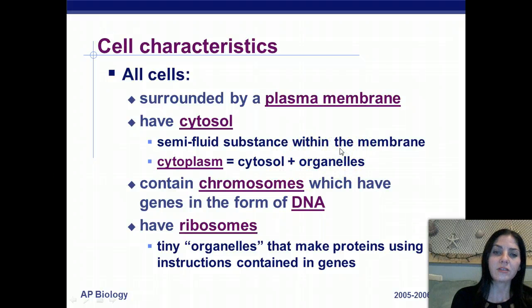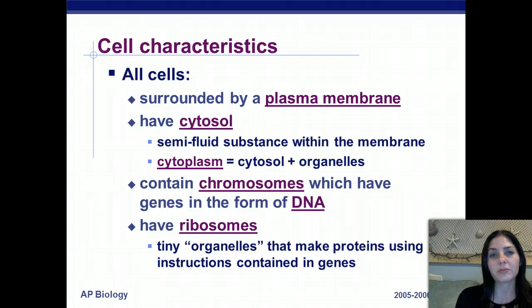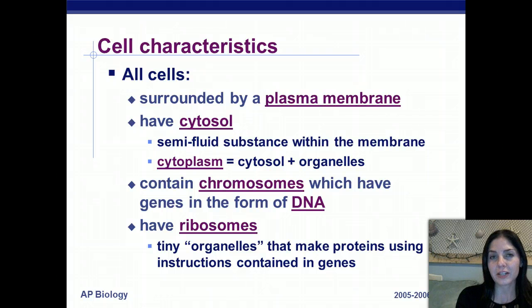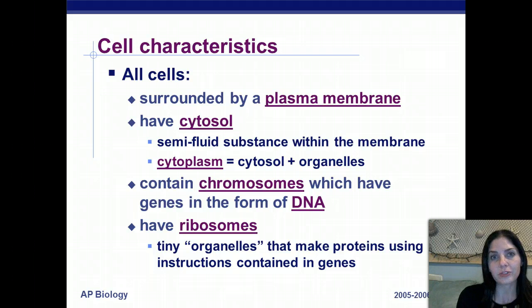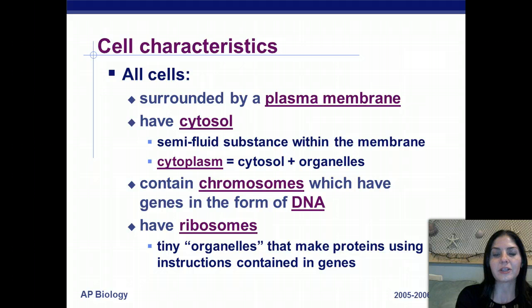Cells also contain chromosomes, which have genes in the form of DNA. They have ribosomes, which are the sites for protein synthesis, where proteins are made. These are tiny organelles that make proteins using the instructions contained in the genes.